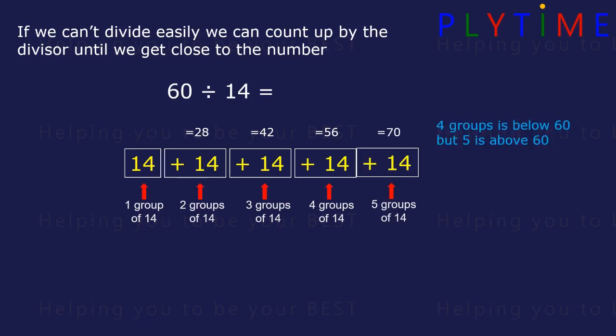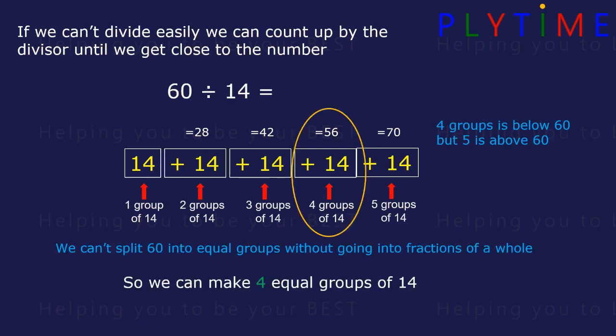4 groups is below 60, but 5 groups is above 60. We can't split 60 into equal groups of 14 without going into fractions of a whole. So we make four equal groups of 14, and that's 56, and we have a remainder.